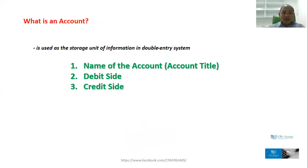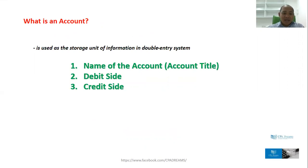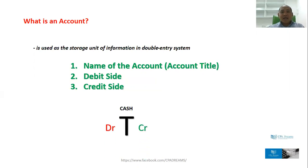Now, but before that — what is an account? An account is used as the storage unit of information in a double entry system. Like, for example, cash account, accounts receivable account, inventory account. They are composed of three parts: the name of the account or the account title, the debit side, and the credit side. We are using it in accounting as the T-account. The account title, for example, is cash. The debit side will be on the left and the credit side will be on the right.